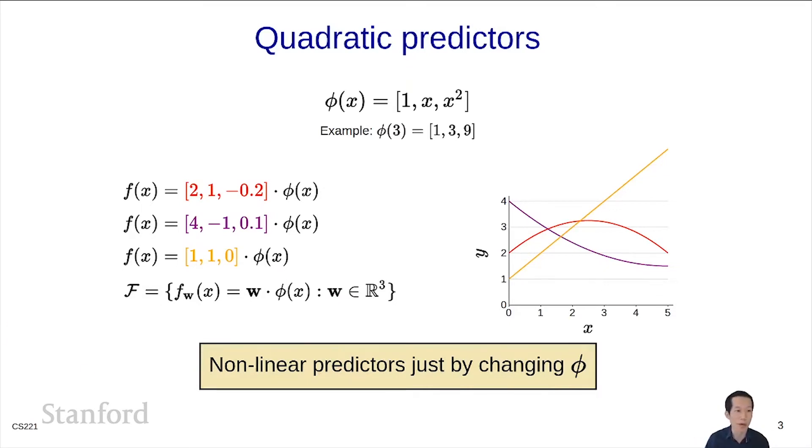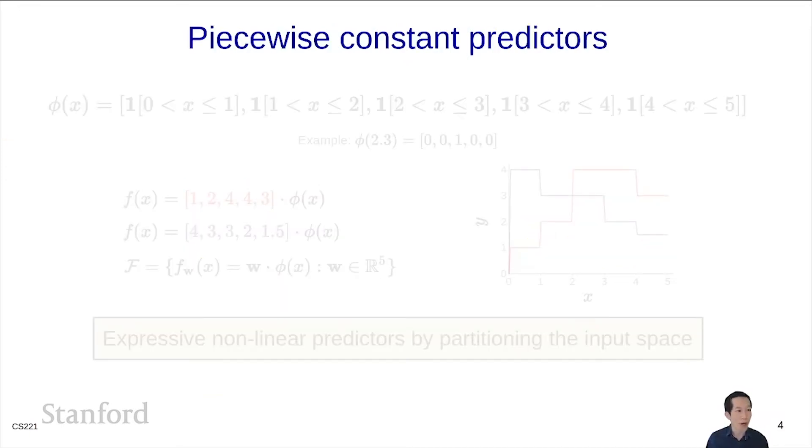One small note here is that in one dimension, x² is just a single feature. But if x were d dimensional to begin with, then to get the full range of quadratic predictors, we would need d² features, one for every xi, xj pair. That's one slight disadvantage of using the machinery of linear predictors to get nonlinear predictors. Let's move on.